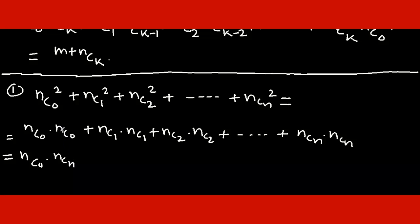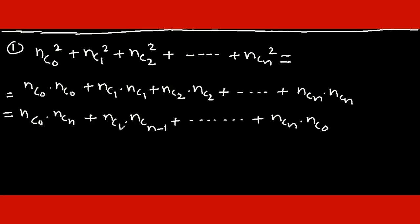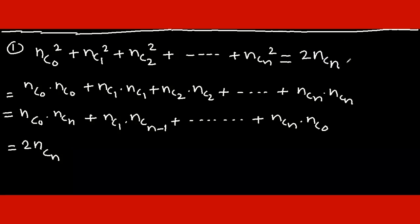Why? Because from n objects, selecting no object is equivalent to selecting n objects. So nC0 equals nCn. Similarly, nC1 becomes nCn-1, and so on, up to nCn into nC0. A very important point is that in each stage we are selecting a total of n objects from 2n distinct objects: 1 plus n-1 is n, and n plus 0 is n. So finally, we can write this as 2nCn.